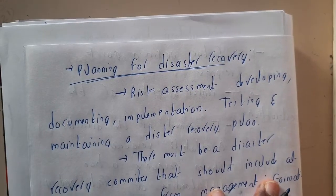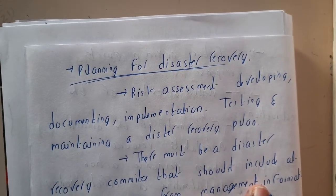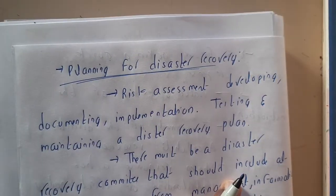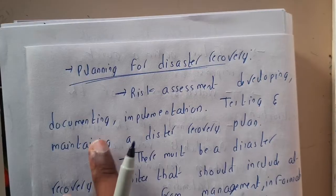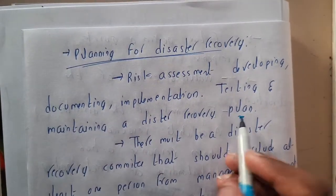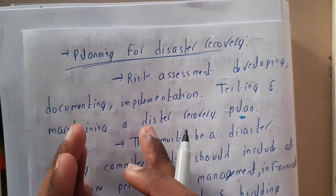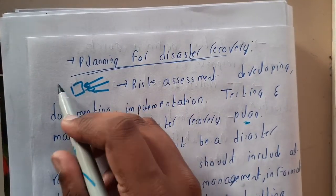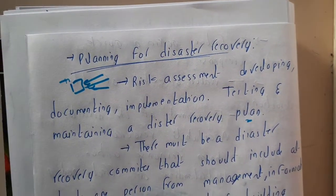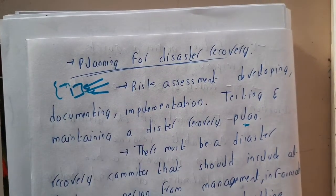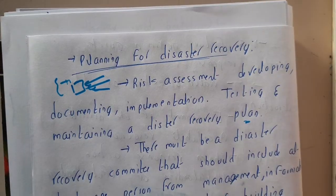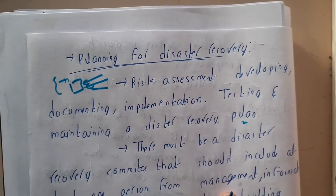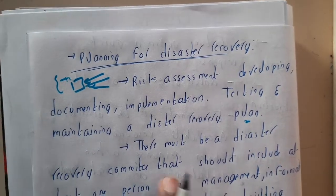Now let us discuss planning for disaster recovery. There will be plans covering what to do first, how to document and develop everything. The key steps include: risk assessment, development, documentation, implementation, testing, and maintenance of a disaster recovery plan. When a company takes on a project, it creates multiple documents, conducts seminars, and designs models. Similarly, they plan how to recover from damage — for example, how to repair roads damaged by earthquake uplift.